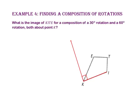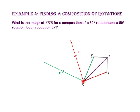Then we will use a compass to create side KI prime that is congruent to side KI. Next, use a protractor to create a 90 degree angle with vertex K and side KE, and use a compass to construct side KE prime congruent to side KE. Then draw segment KT and use a protractor to make a 90 degree angle with vertex K and side KT, using a compass to construct side KT prime congruent to KT. Since we are rotating about point K, K prime will stay where it is at point K.